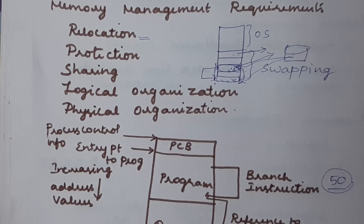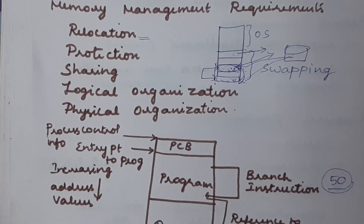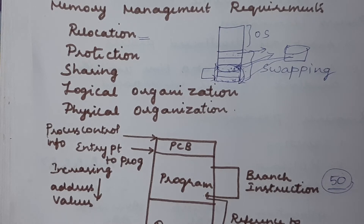It is impossible to check the absolute address at compile time. We have to follow dynamic calculation of addresses at runtime. All memory references by the process must be checked at runtime, and only then should we provide access for getting the data or any other process.